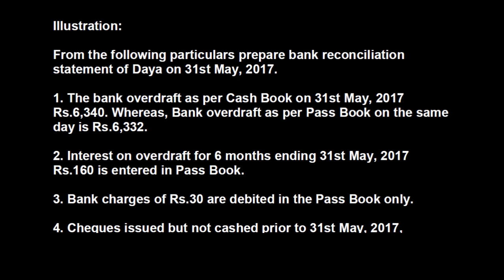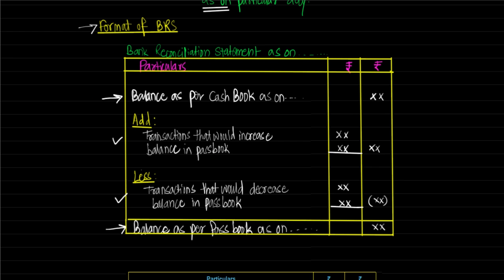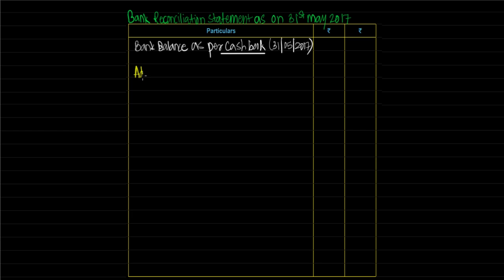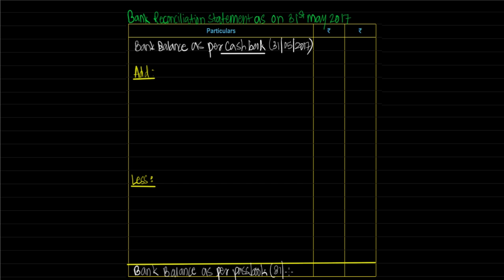Here is one illustration — from the following particulars, prepare bank reconciliation statement of Daya as on 31st May 2017. So we begin the bank reconciliation statement as on 31st May 2017, starting with bank balance as per cashbook. Note that there is no need to always start with cashbook balance — you can start with passbook balance — but it is advisable to start with cashbook balance. We will add certain things and deduct some things to land up at bank balance as per passbook as on 31st May 2017. While solving this example, you will come to know what are the reasons by which there is a difference between bank balance as per cashbook and bank balance as per passbook on the same day.